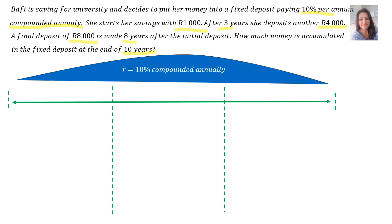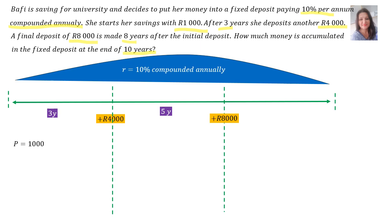She starts her saving with 1,000 rand, so we start with P = 1,000 rand. After 3 years, she deposits another 4,000 rand — there on the dotted line you will find the 4,000 rand. A final deposit of 8,000 rand is made 8 years after the initial deposit, which implies that the middle block of time is 5 years. The last block, at the end of 10 years, is then 2 years.